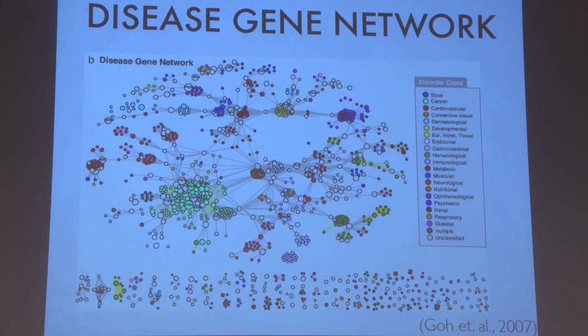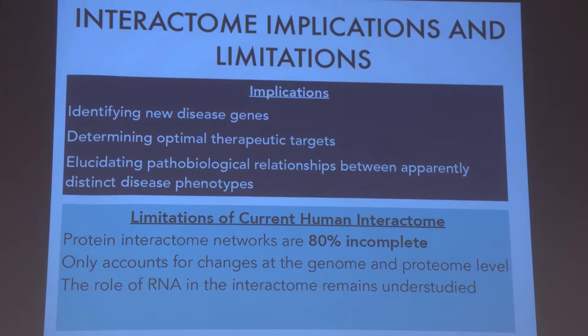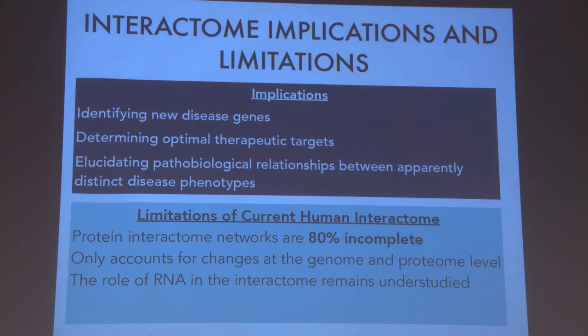So what are the implications of the human interactome? If we had a complete human interactome, we could use it to identify new disease genes, determine optimal therapeutic targets, and elucidate relationships between seemingly distinct disease types. However, the current human interactome is thoroughly incomplete — it contains networks at the gene and protein level, but it is missing networks at the RNA level.